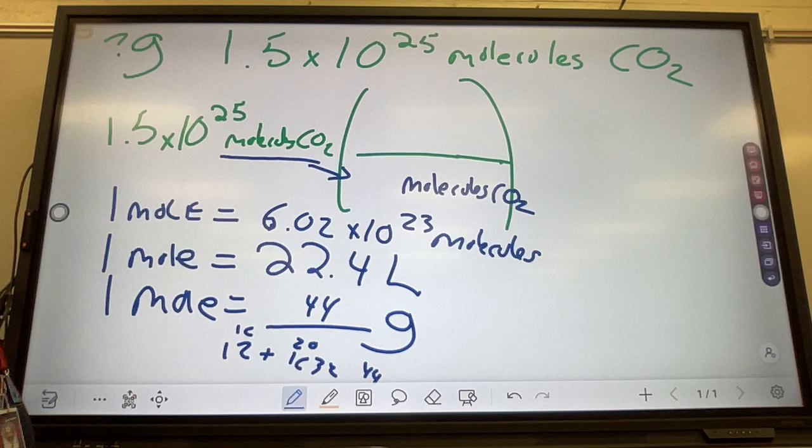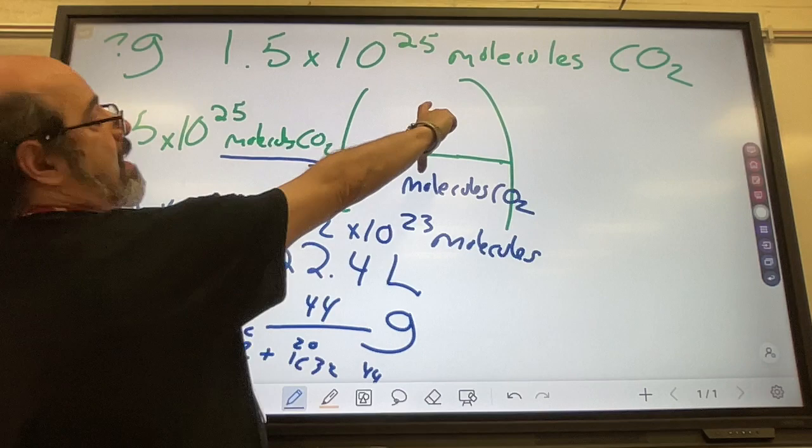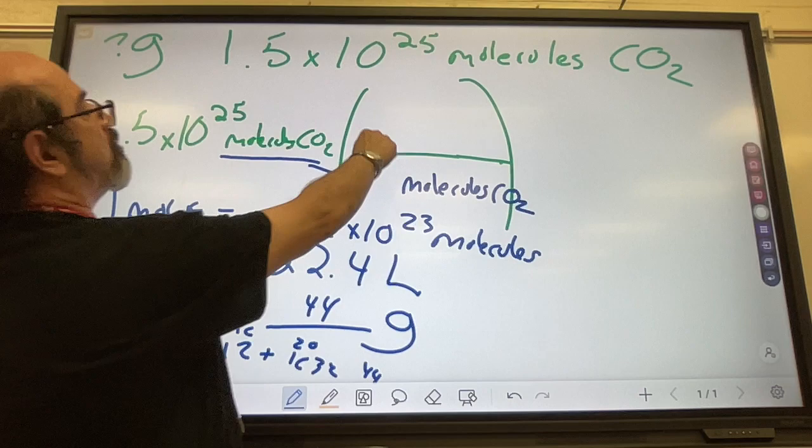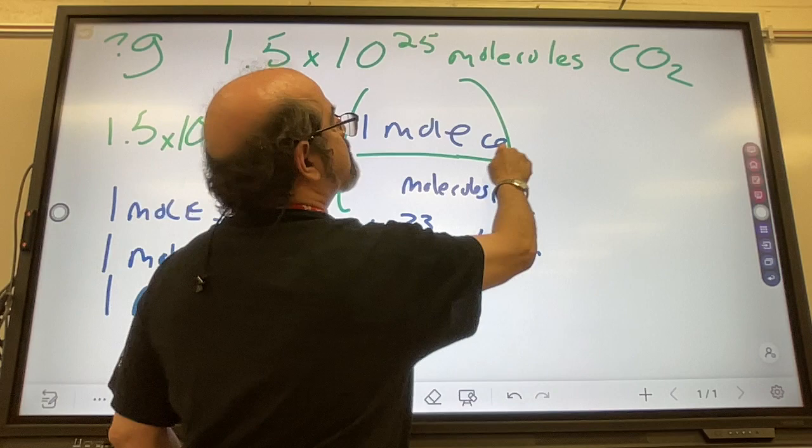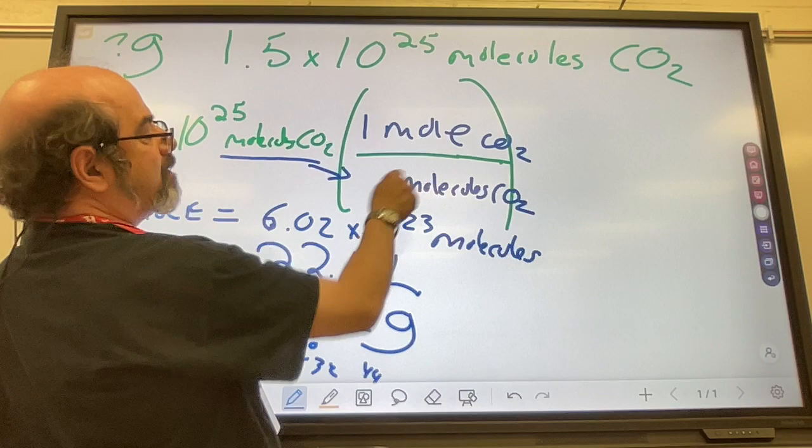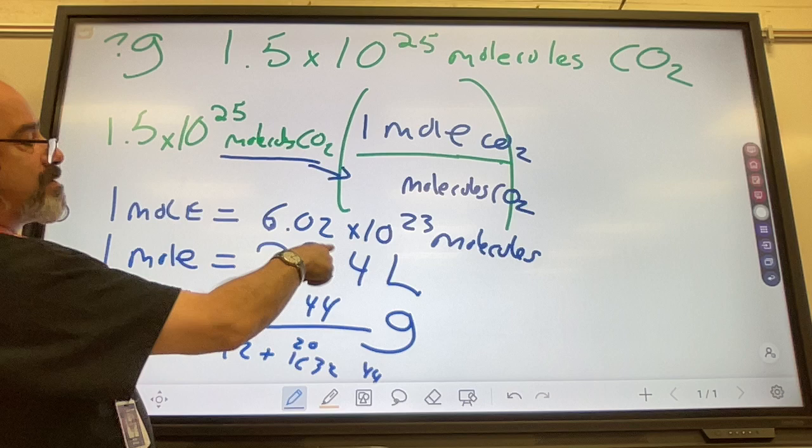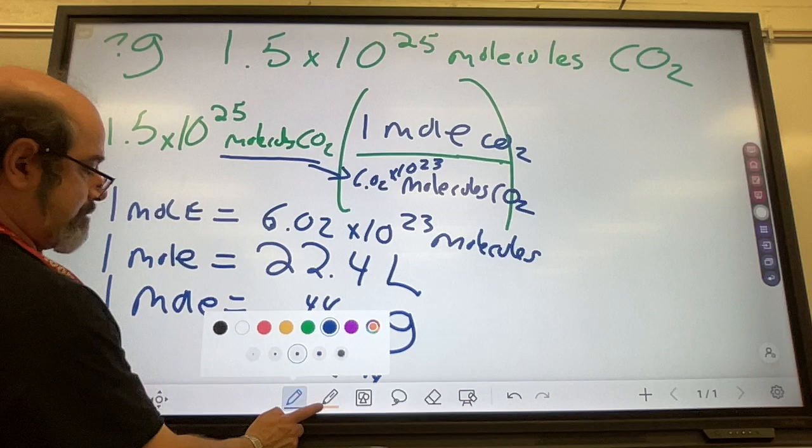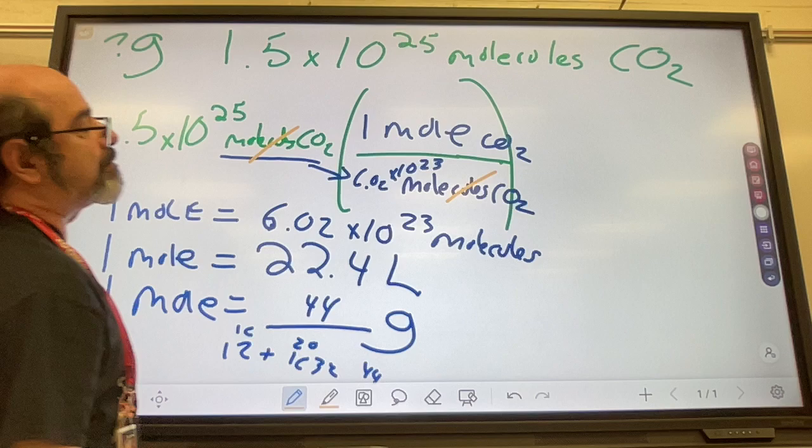You know you have to use one of them. So, this is the conversion factor that we have, the molecules on the bottom. So, we know on the top goes 1 mole equals 6.02 times 10 to the 23rd molecules. You're focusing your attention on the units. The numbers come automatically. 6.02 times 10 to the 23rd.